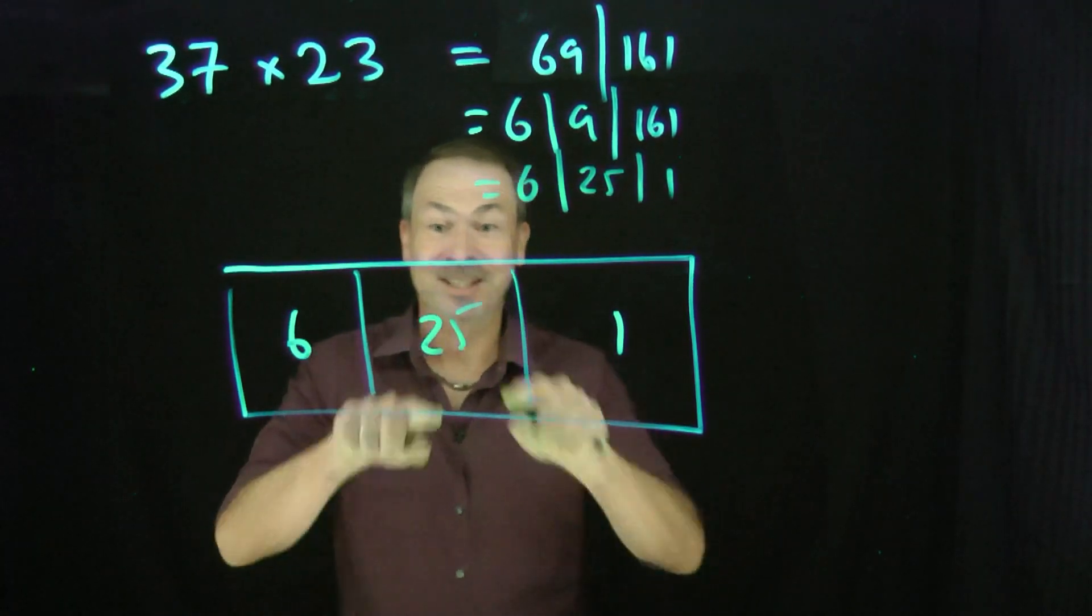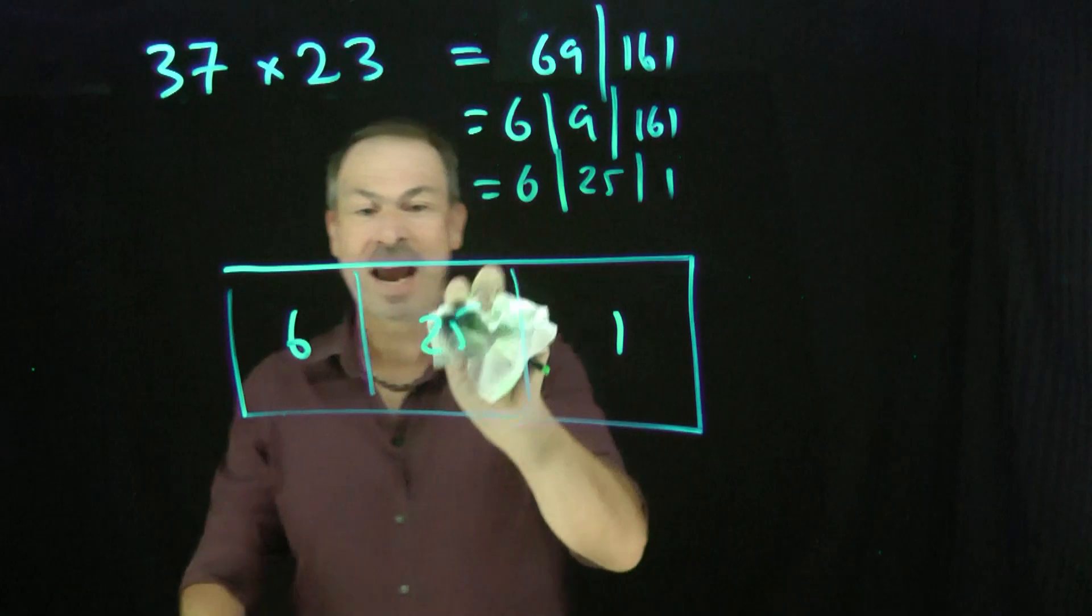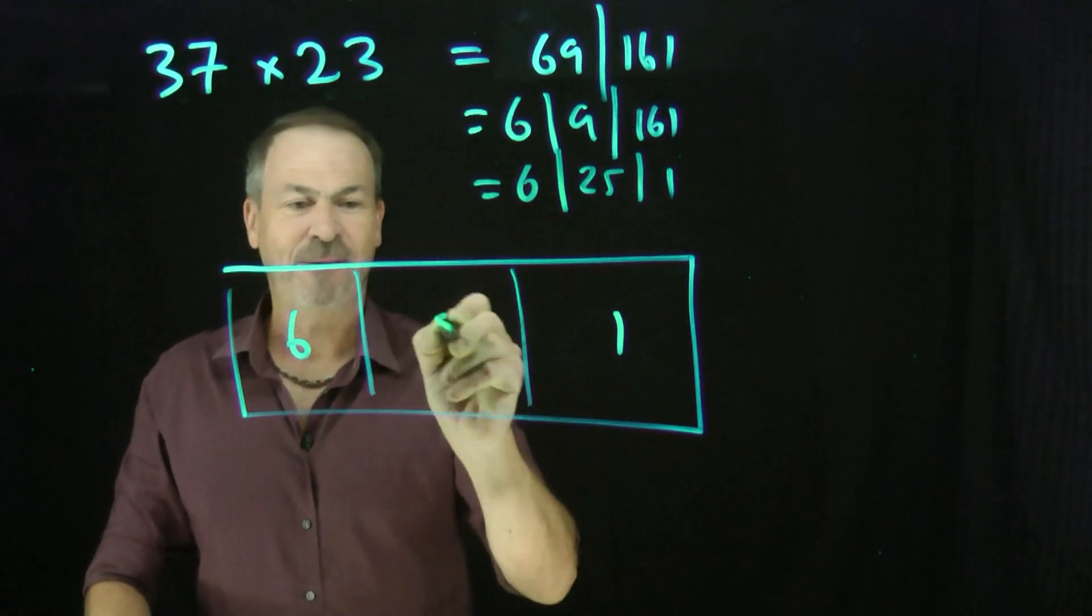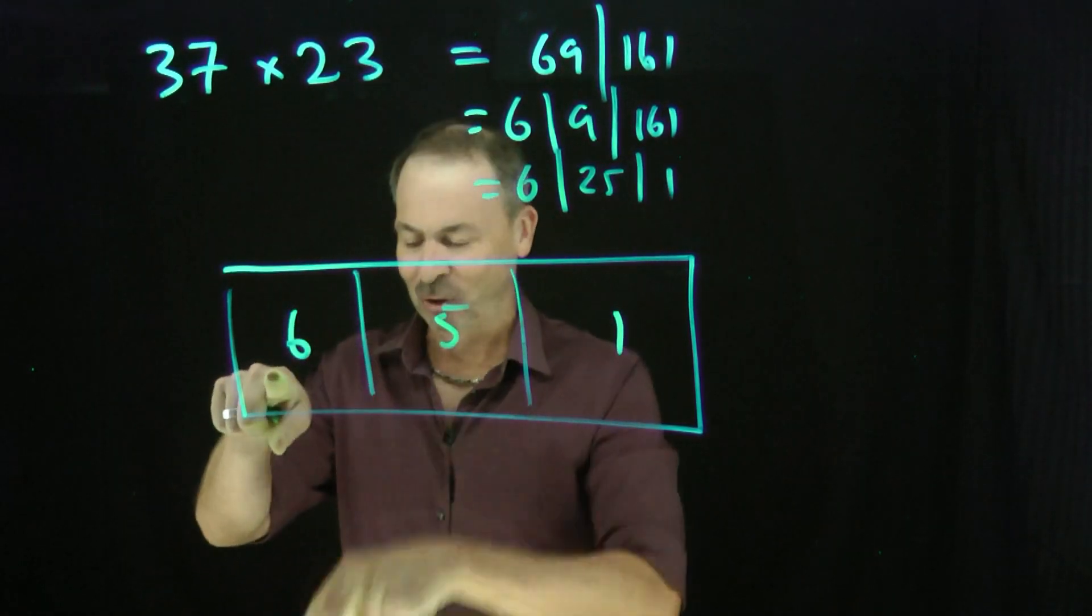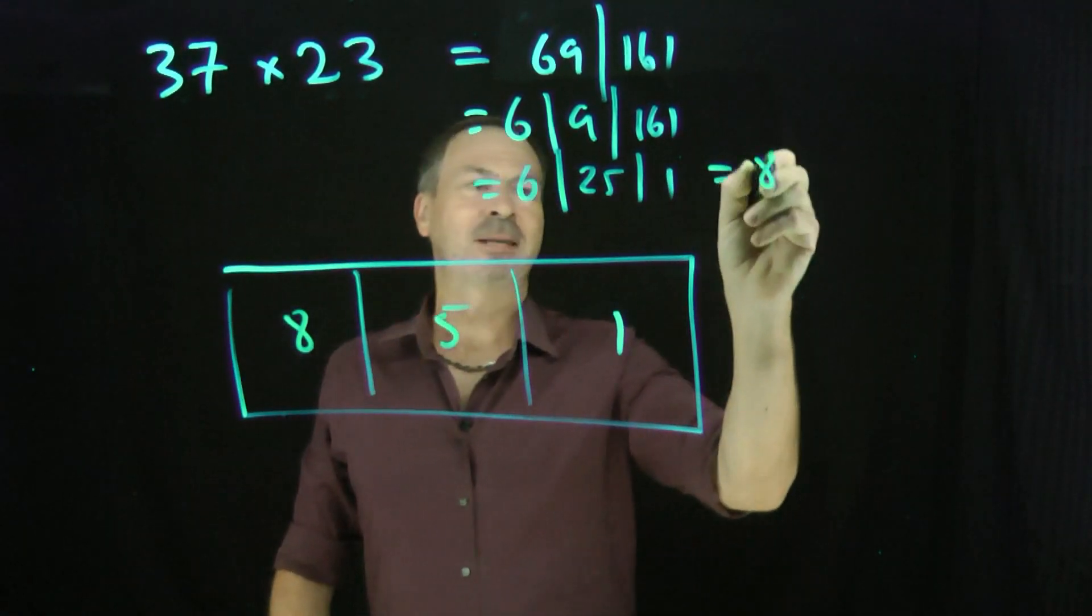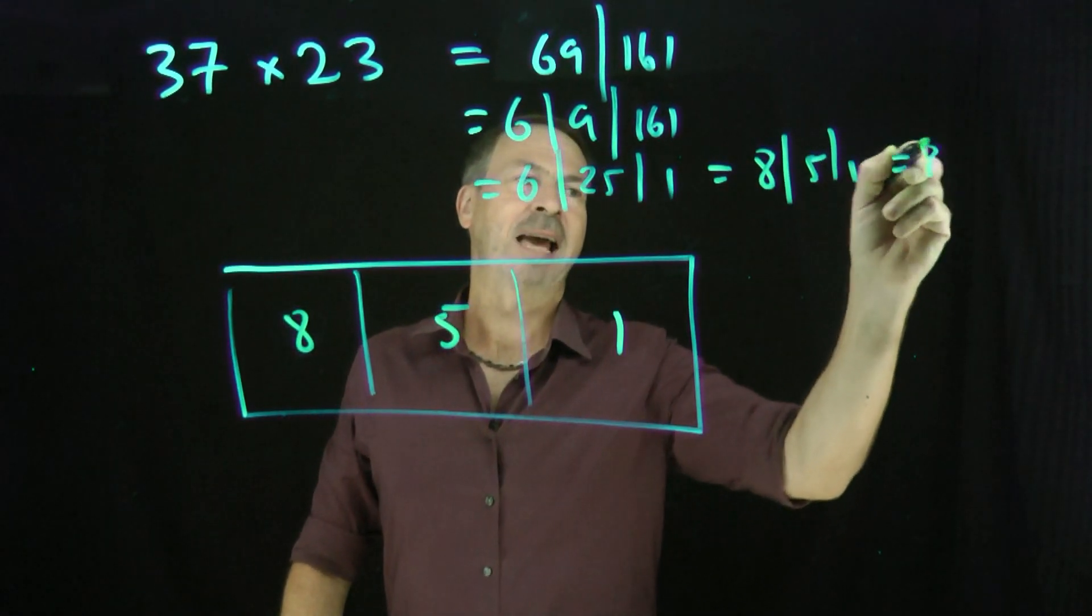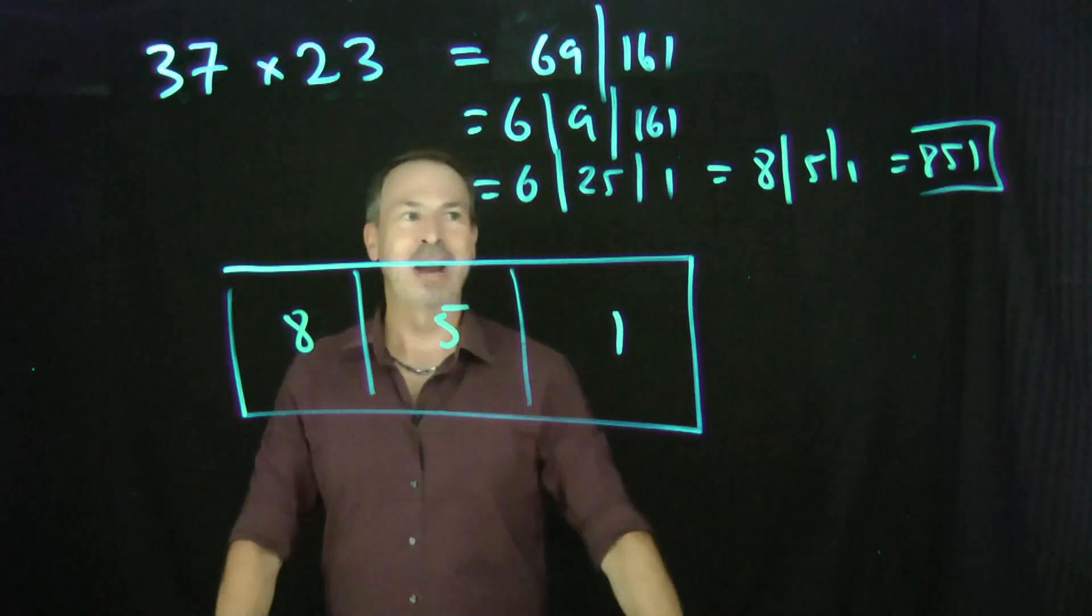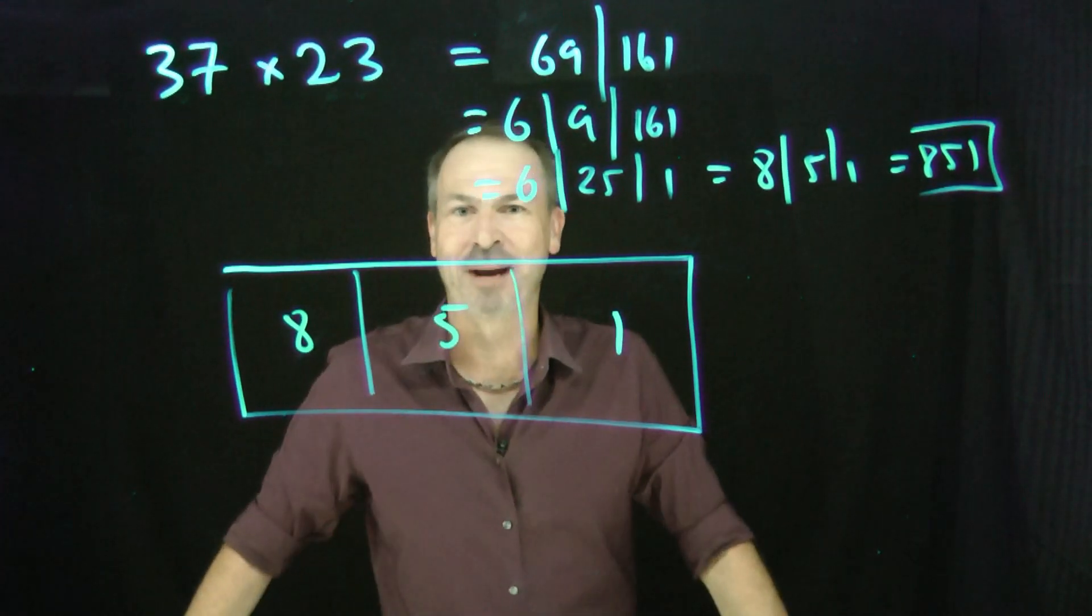But there's more explosions. 2 groups of 10 there. Explode away. Leave 5 behind. 2 explosions. Make an extra 2 dots there. To go with the 6. Means I'll have 8 dots there. The answer is 851. That is 851. Just written normally. There we go. 37 times 23 is 851.